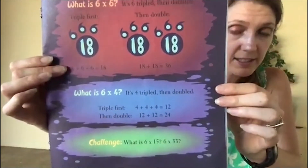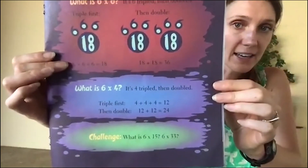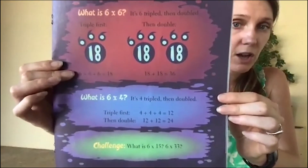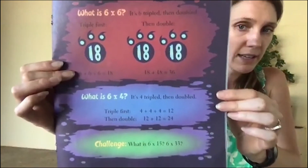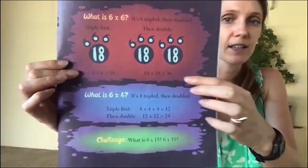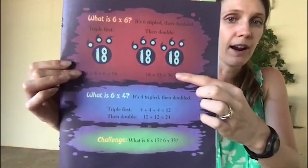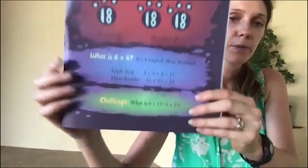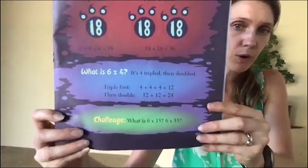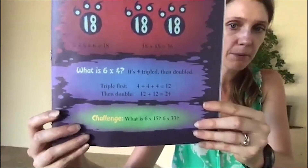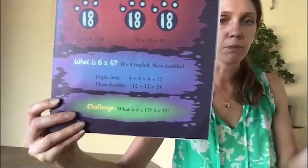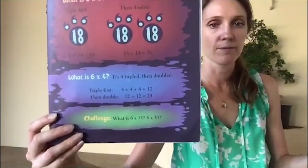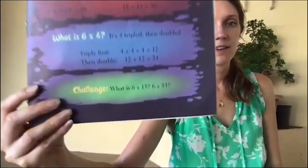What's 6 times 3? That's 6 plus 6 plus 6, which is 18. Then you double that answer: 18 plus 18 equals 36. So 6 times 6 is 36. What's 6 times 4? Four tripled then doubled — triple first: 4 plus 4 plus 4 is 12, double: 12 plus 12 is 24. And there are your challenges!